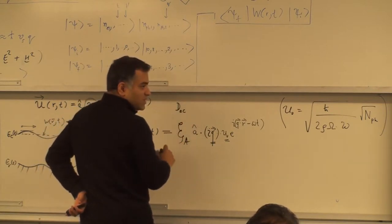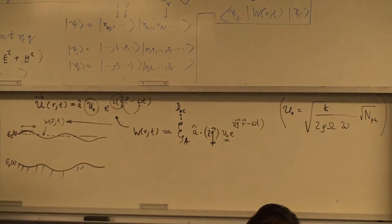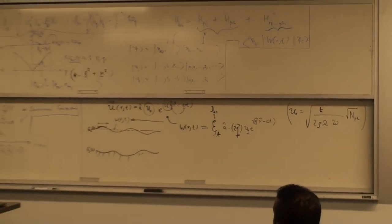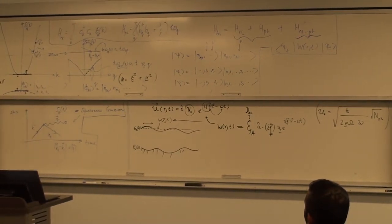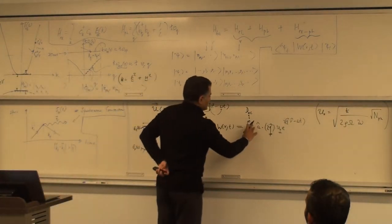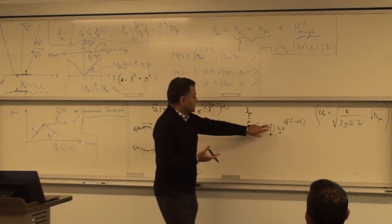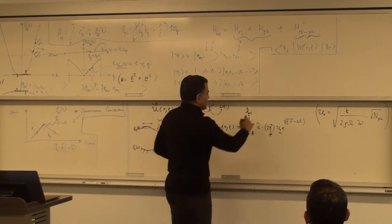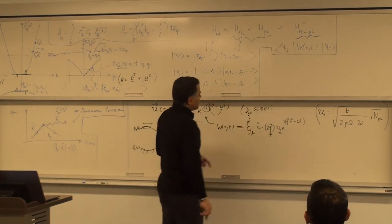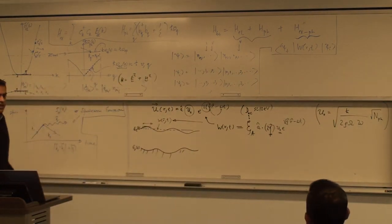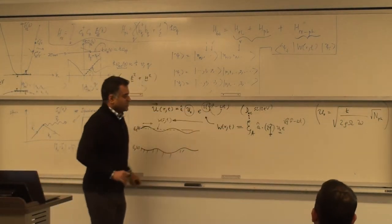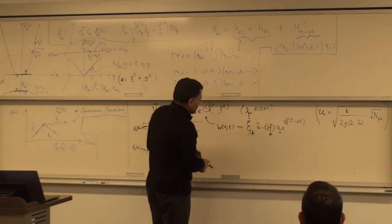The proportionality constant relating the band edge shift to strain is called the deformation potential, denoted D (or E_A for acoustic). The change in band edge energy is D times the local strain (divergence of u). This is the Bardeen-Shockley deformation potential concept: a linear approximation that the band edge shifts proportionally to strain. Typical values are around 8–10 eV for most semiconductors like silicon and gallium arsenide.